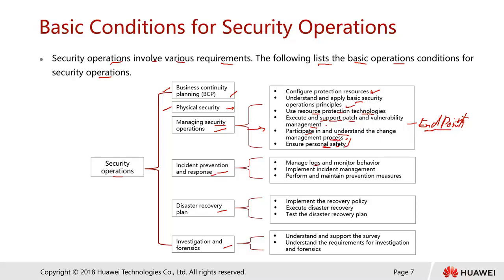For incident prevention and response, we need to manage logs and monitor behavior — who accesses the server, who accesses the system, who tried to penetrate our system. We also need to implement an incident response procedure, so that just in case an incident happens, there is a step-by-step procedure to handle the issue, maintain prevention measures, and educate users on what should and should not be done.